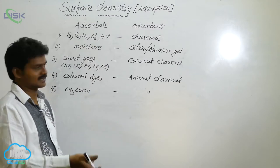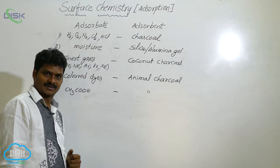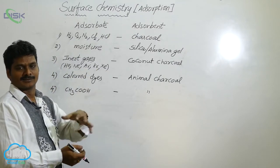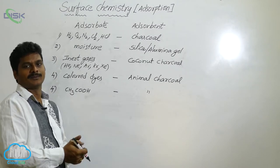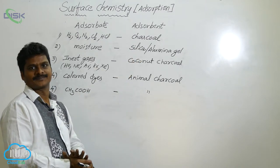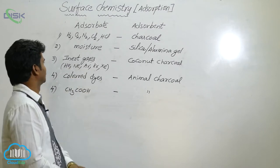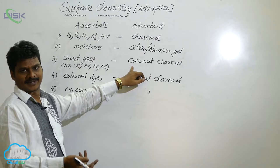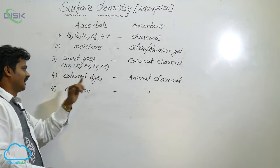Similarly, when there is moisture in a vessel and we place silica gel or alumina gel, the humidity decreases. For inert gases, using coconut charcoal we can separate noble gases from air.